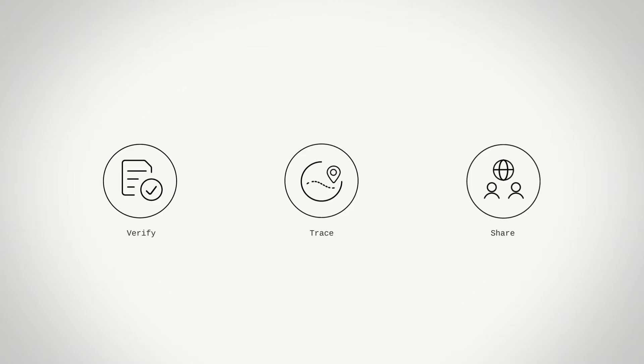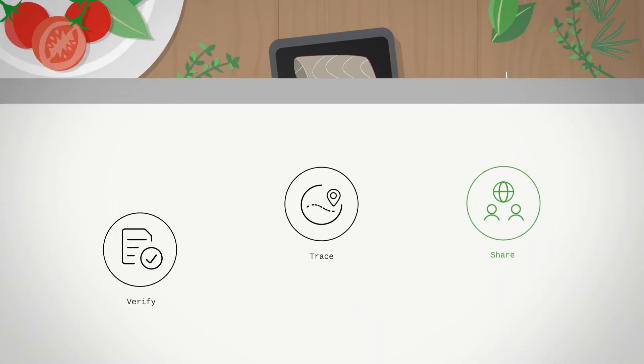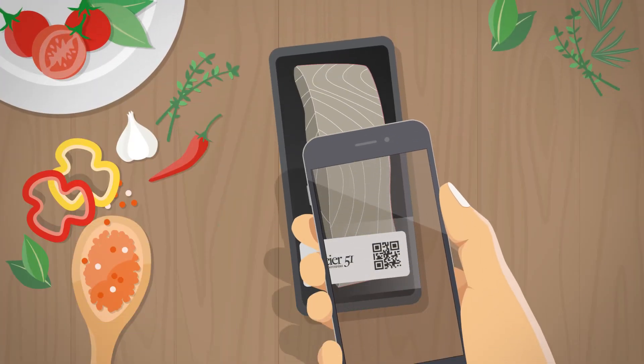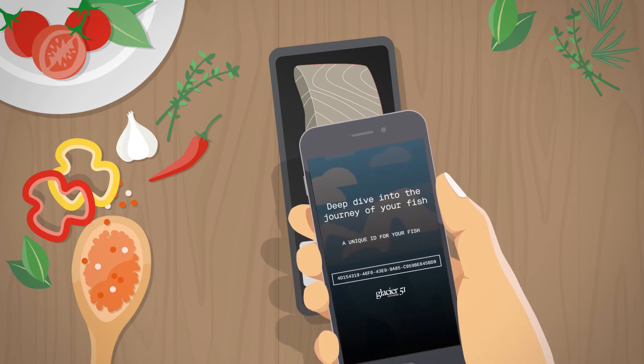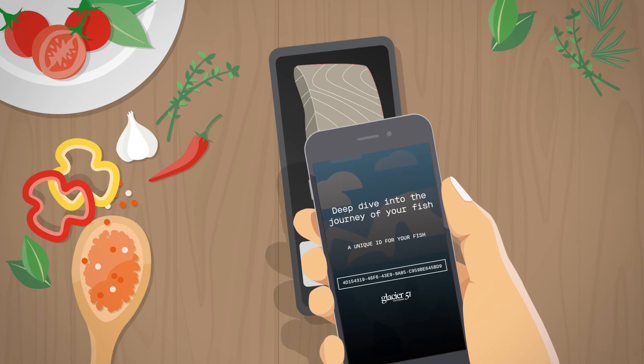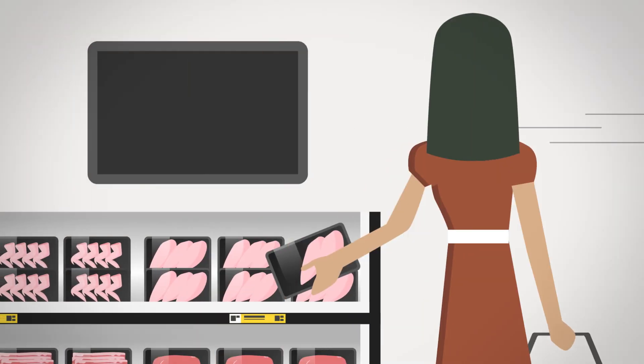OpenSC works with businesses to design ways of sharing this information with consumers through engaging digital experiences across a range of channels including on-product packaging, where consumers can scan QR codes to see the origin and journey of their item.